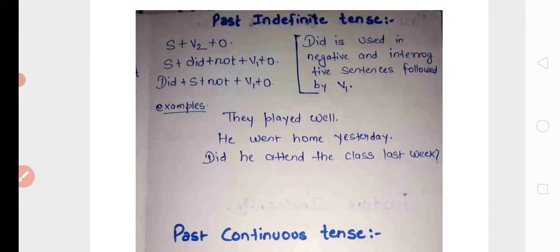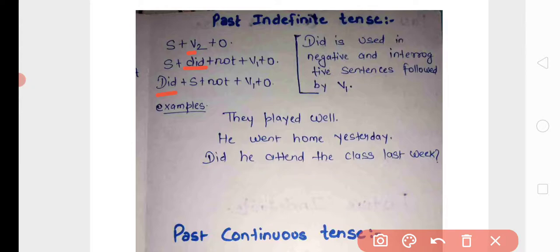Now, past indefinite tense (simple past). Structure: subject plus second form of verb (V2) plus object. For negative and interrogative, we use 'did': subject plus did not plus V1 plus object; interrogative: did plus subject plus not plus V1 plus object. Examples: 'They played well' (انہوں نے بڑھیا کھیلا), 'He went home yesterday', 'Did he attend the class last week?' These are sentences where events occurred in the past.